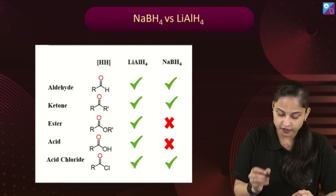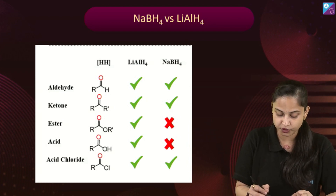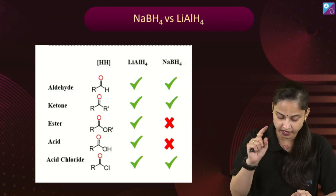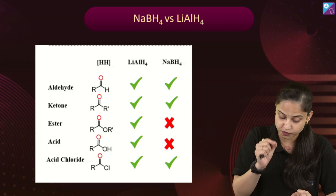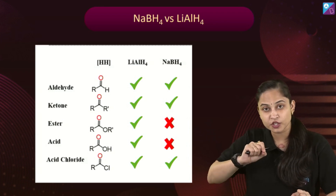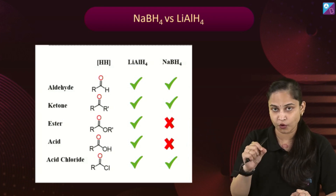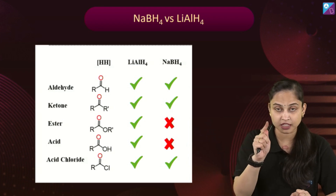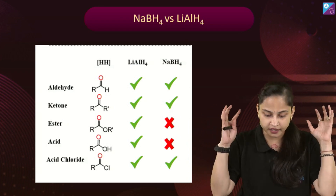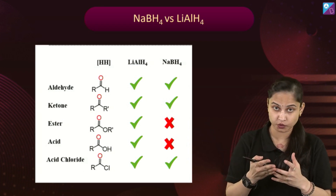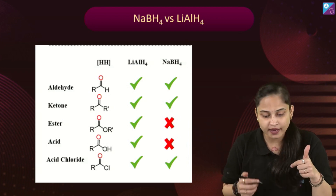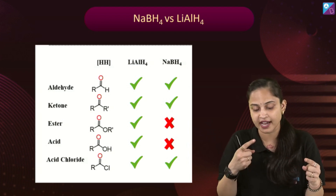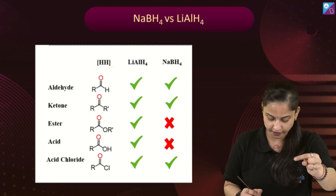In summary: lithium aluminum hydride and sodium borohydride both reduce aldehydes and ketones. Sodium borohydride does not reduce esters and acids, whereas lithium aluminum hydride reduces both. Sodium borohydride reduces acid chlorides, but lithium aluminum hydride reduces all oxygen-containing groups to primary alcohols except ketones, which it reduces to secondary alcohols. That's why lithium aluminum hydride has more tendency to release hydride ion in comparison to sodium borohydride.